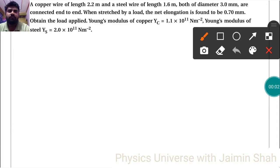Now the question is: a copper wire of length Lc equals 2.2 meters and a steel wire of length Ls equals 1.6 meters.